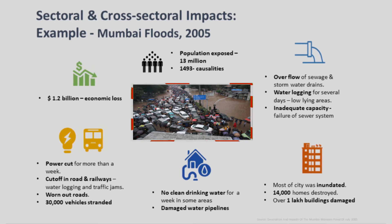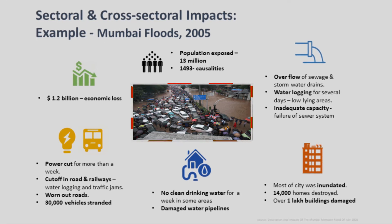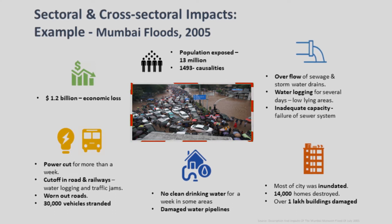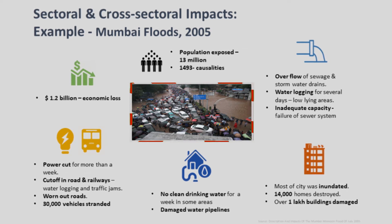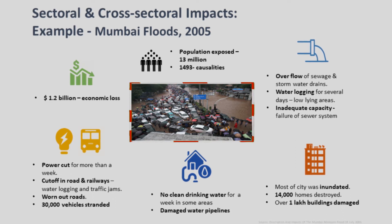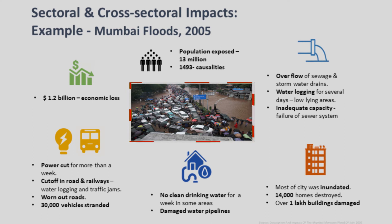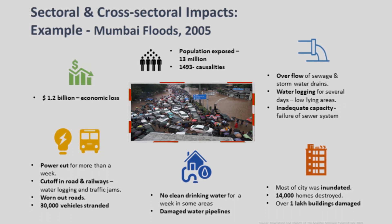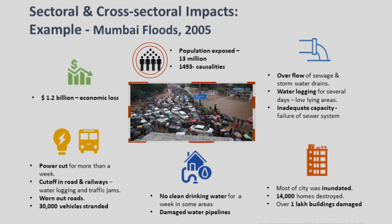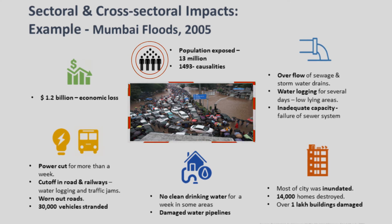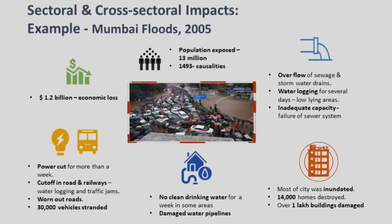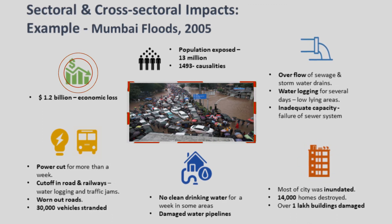The Mumbai floods of 2005 provide a comprehensive and dire picture of the impacts of extreme climatic events. According to The Guardian, on 26th July 2005, Mumbai City received a record 944 mm of rainfall in 24 hours — the average amount for the entire season and the highest in 100 years. Reportedly, 1,493 people died, more than 14,000 homes were destroyed, and the city incurred losses amounting to almost 1.3 billion euros.